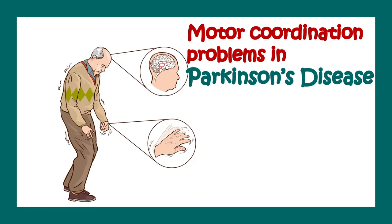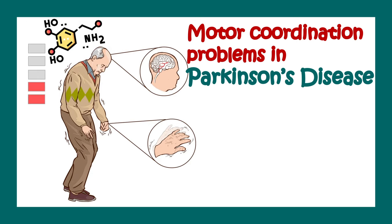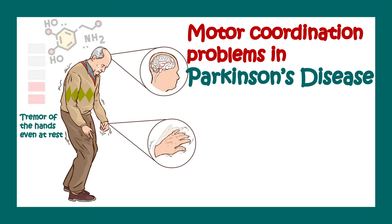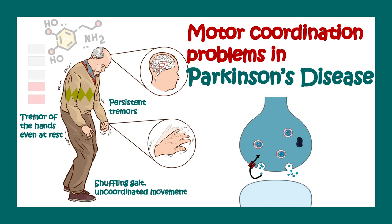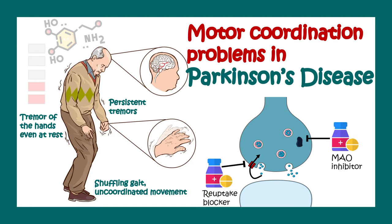The motor coordination problems in Parkinson's disease are associated with dopamine deficiency. When dopamine levels are low, there can be tremors, uncoordinated movement, shuffling of gait, and overall dysregulated motor behaviors. Medications that prevent dopamine reuptake allow dopamine to persist in the synaptic cleft longer, and MAO inhibitors can also be useful to treat Parkinson's disease.